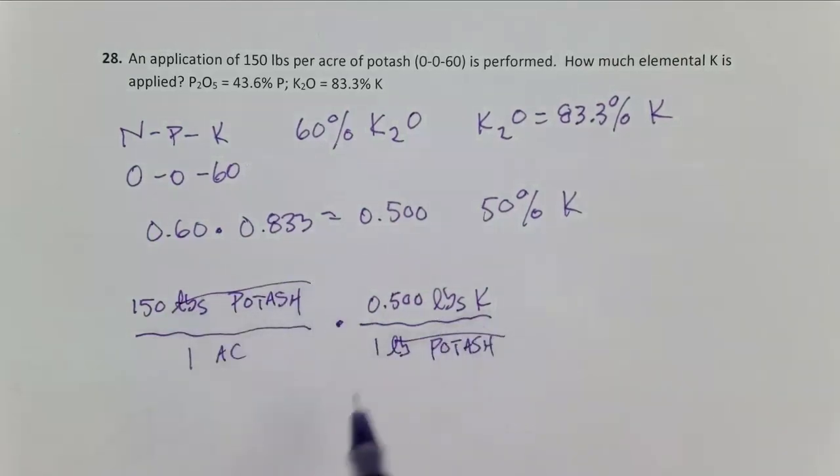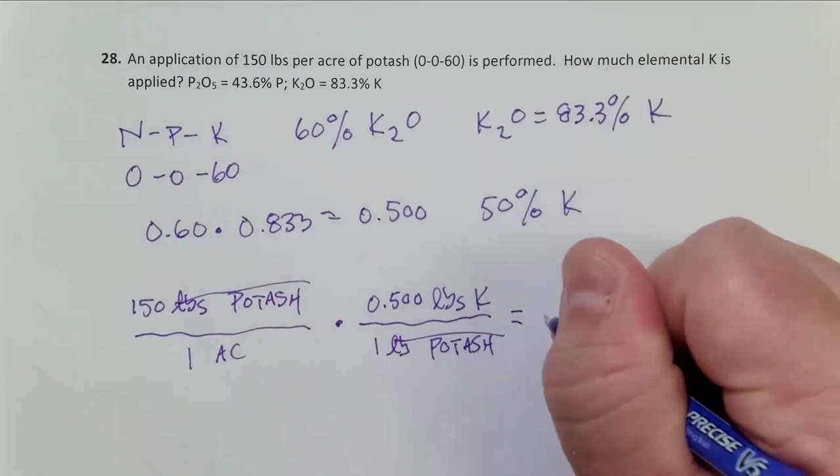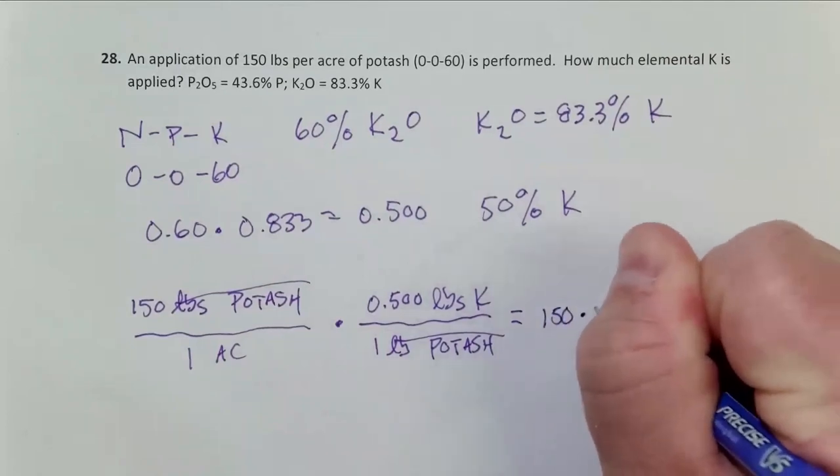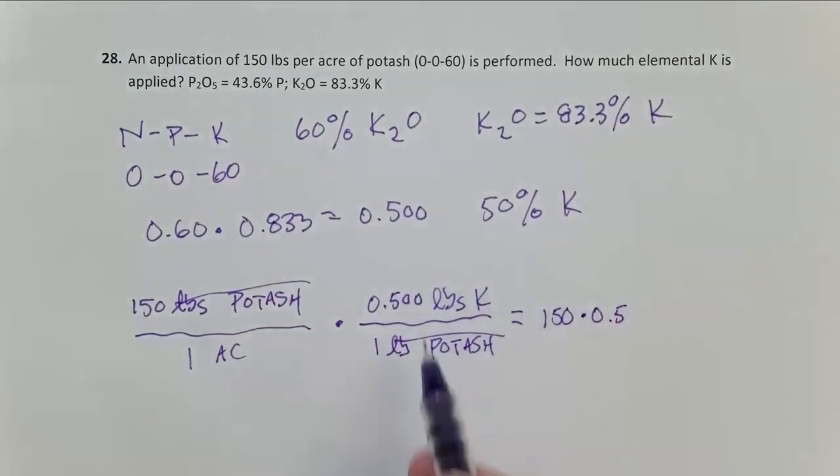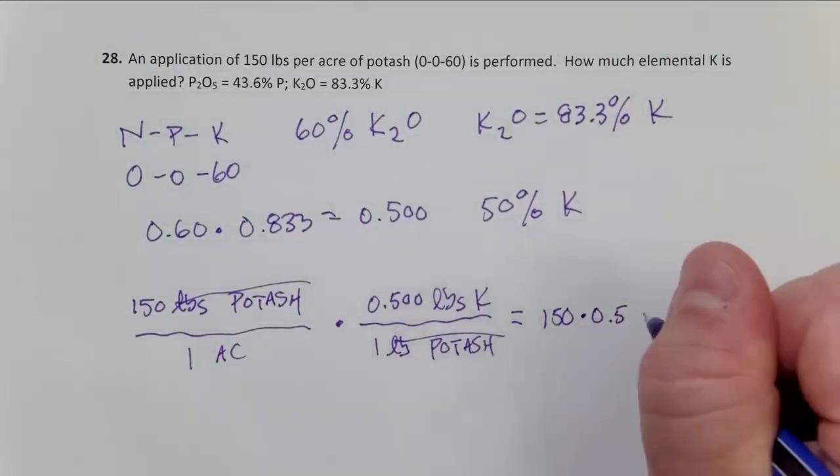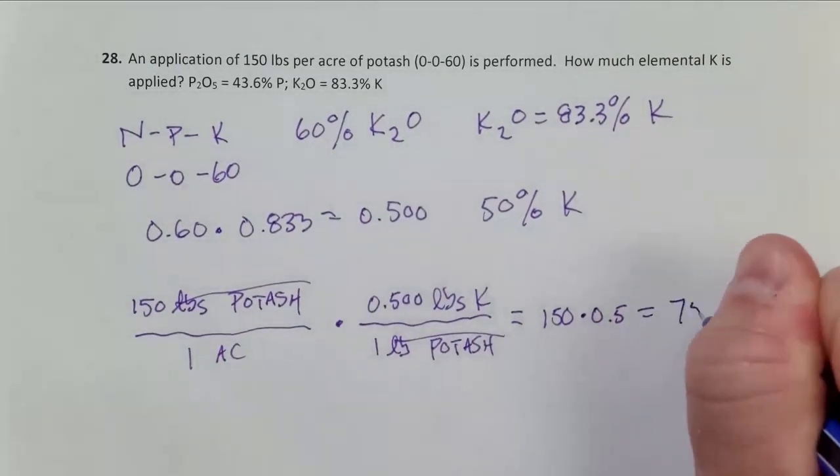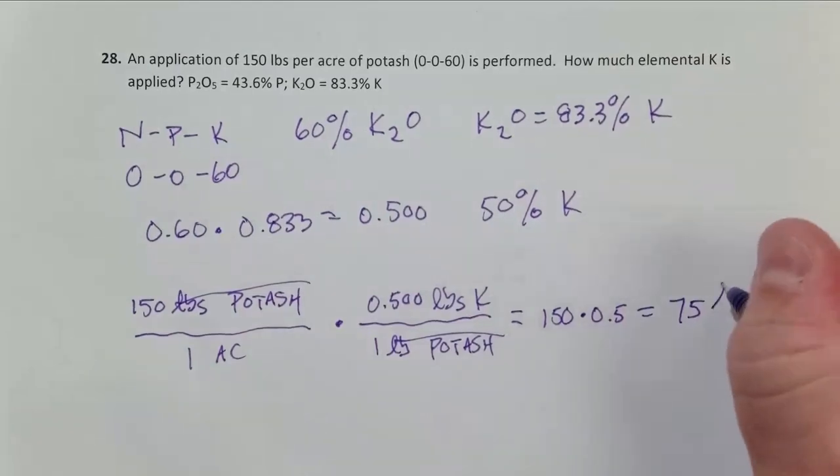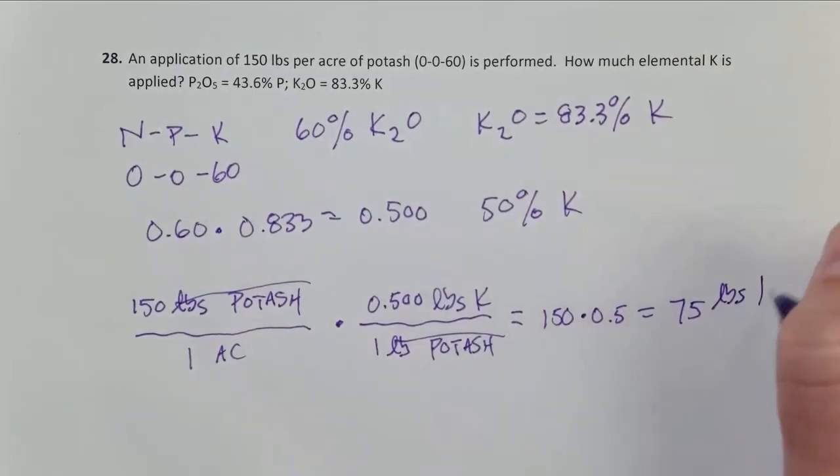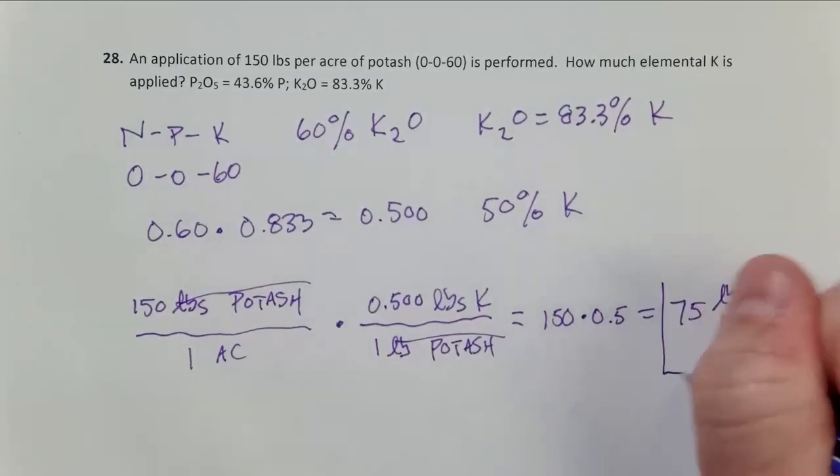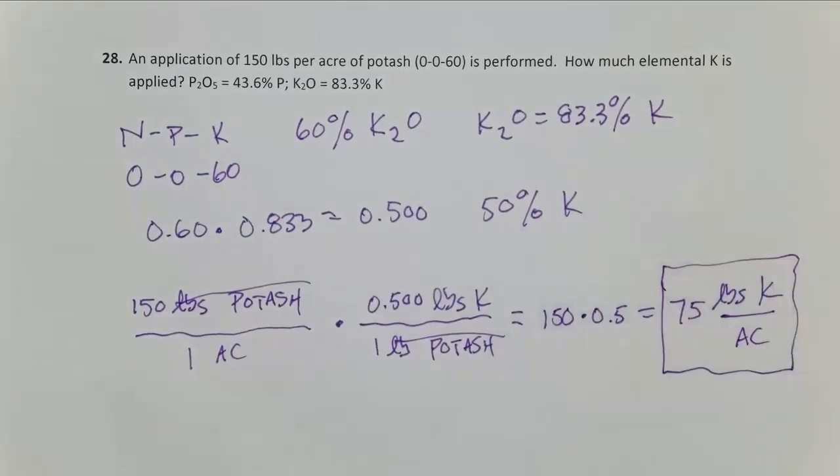I'm looking for pounds of elemental K per acre and that's exactly what the question is asking for. So it becomes simply 150 times 0.5. Zeros don't matter because they're zeros. If they were other numbers you'd need to write them. That equals 75 pounds potassium per acre.